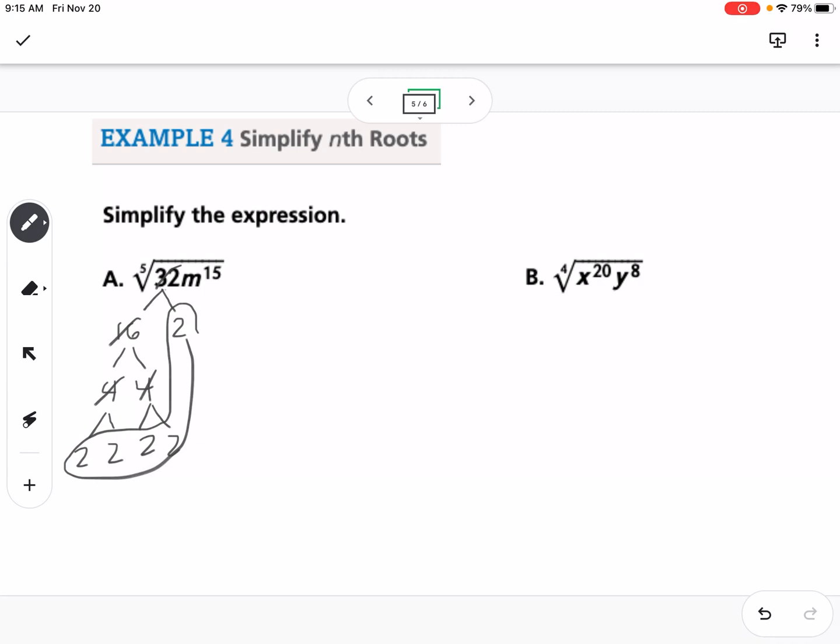Now, this problem only, I'm going to just draw out the M's. So we have 15 M's. So we have 1, 2, 3, 4, 5, 6, 7, 8, 9, 10, 11, 12, 13, 14, 15. Okay, we need groups of 5. So we have 1 group of 5, 2, 3 groups of 5. To simplify this, I would get 2 M to the third power.